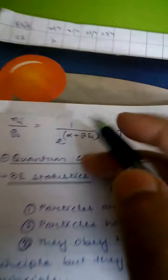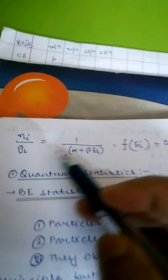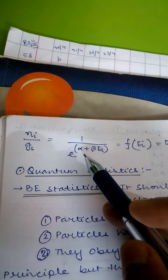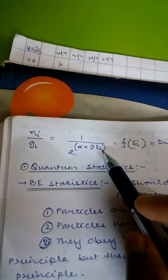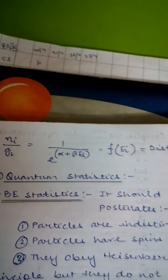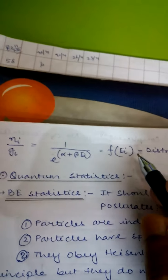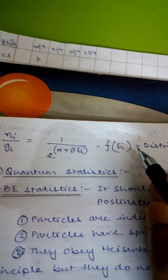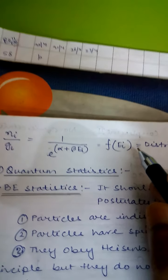Dividing n_i by g_i gives the distribution function: f(e_i) equals 1 over e to the power (alpha plus beta times e_i). This ratio n_i over g_i is called the distribution function. Another important property of classical MB statistics is that it does not follow the Heisenberg uncertainty principle.